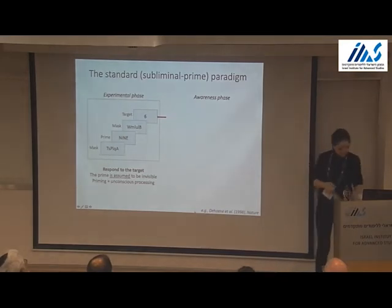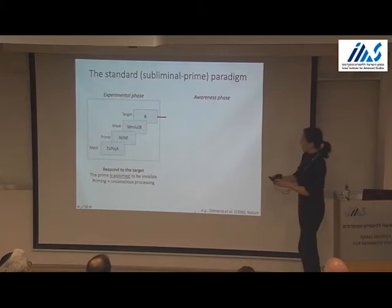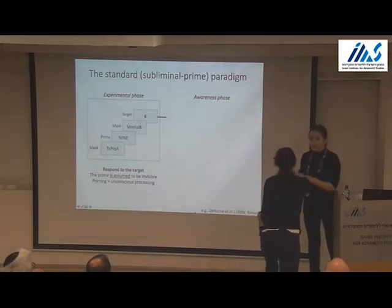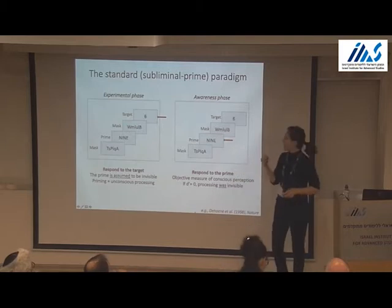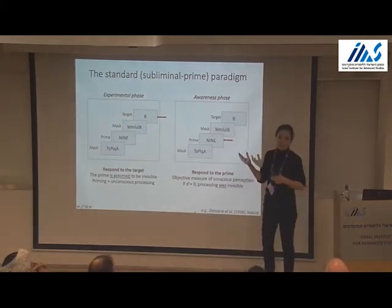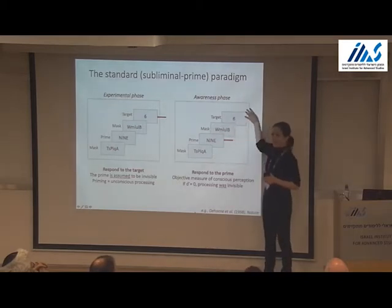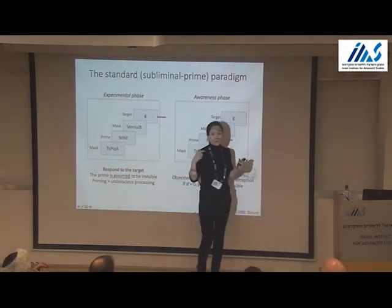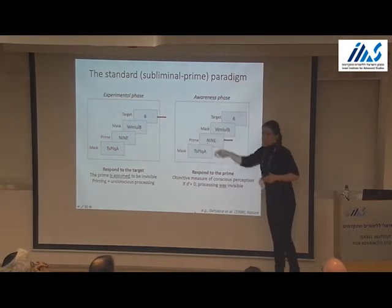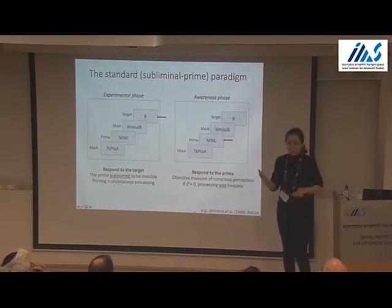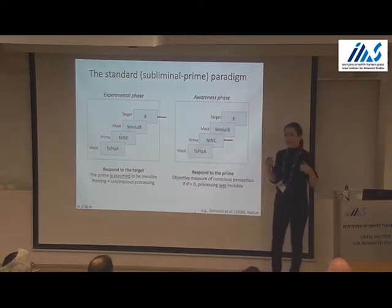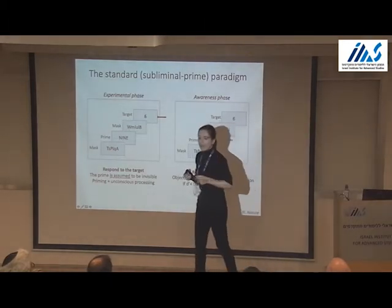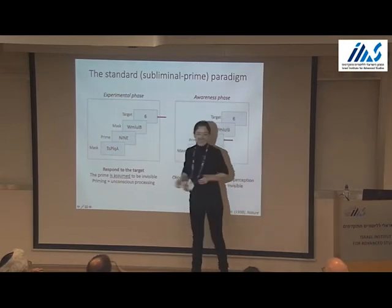To verify that subjects have no notion the prime is there, you have a second phase that comes at the end of the experiment, in which you want to verify that the prime was not consciously perceived. In this phase, we have exactly the same sequence of events, but instead of asking something about the target, the subject now knows there was a prime and is asked about it. There is a variety of different methods to verify conscious perception of the prime — it's usually a discrimination task. If responses are at chance, you decide that the prime was not consciously perceived in the main experiment.